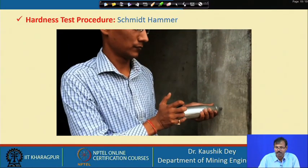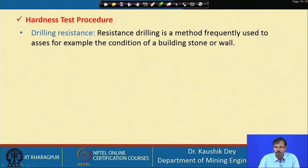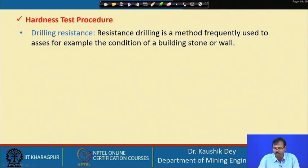On rebound, the indicator moves up to the number, and that is why it is called the rebound number. Rebound number can be directly correlated with other mechanical properties. The Schmidt hammer gives the surface hardness of the rock structure even when it is in situ. This rebound number basically dictates the hardness of the rock surface. Apart from this, other hardness measuring procedures exist, like Rockwell hardness, which can be read from standard textbooks on rock properties.